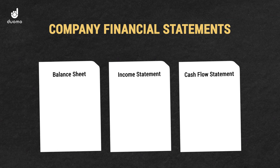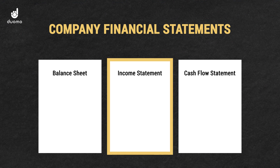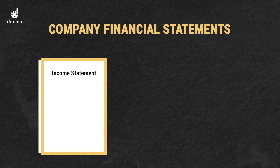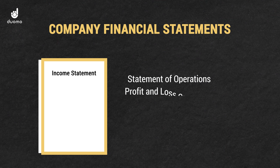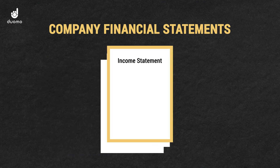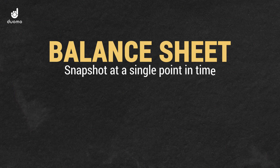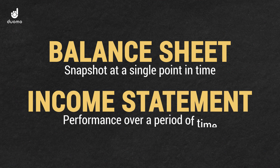The next financial statement is the income statement, also known by other names including Statement of Operations and Profit and Loss Statement, amongst many others. This statement is going to show us the earnings and expenses of a company over a specific period of time. This is important to keep in mind: the balance sheet was a snapshot at a particular point in time, whereas the income statement is looking at what happened over a specific period of time. So the income statement is helping us to see a company's financial performance for that period.